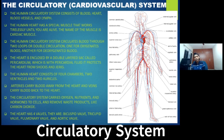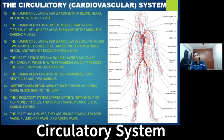The human heart has a special muscle that works tirelessly until you are alive. The name of the muscle is cardiac muscle. The human circulatory system circulates blood through two loops, or double circulation — one for oxygenated blood and another for deoxygenated blood.